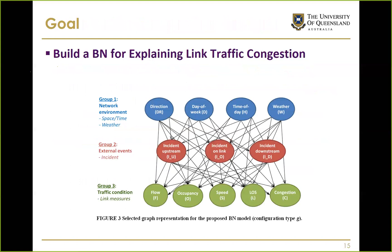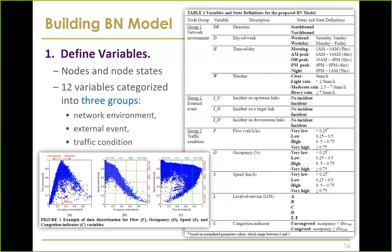The overall goal of this paper was to build a Bayesian network model considering different variables — network and external events variables and traffic condition variables — to predict and diagnose link traffic conditions. We built this model for links along a particular road network in Brisbane. The first step was defining variables.